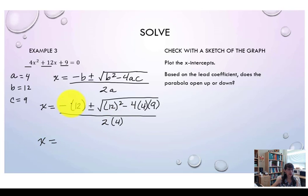To simplify, negative times positive 12 gives us negative 12 plus or minus terms under the radical. 12 squared means 12 times 12, or 144.